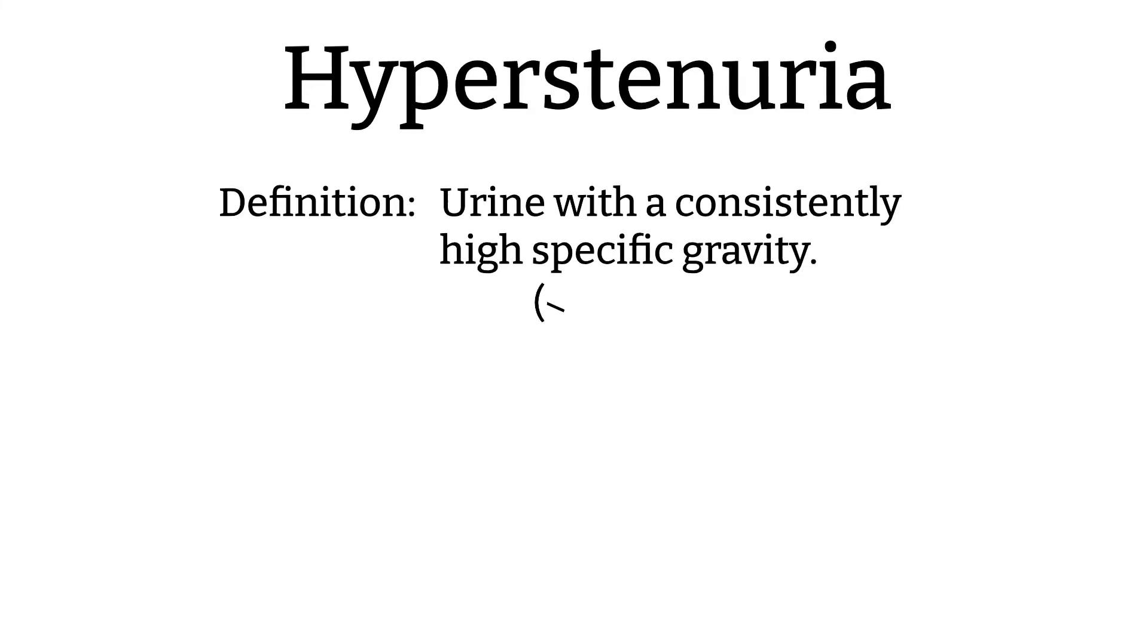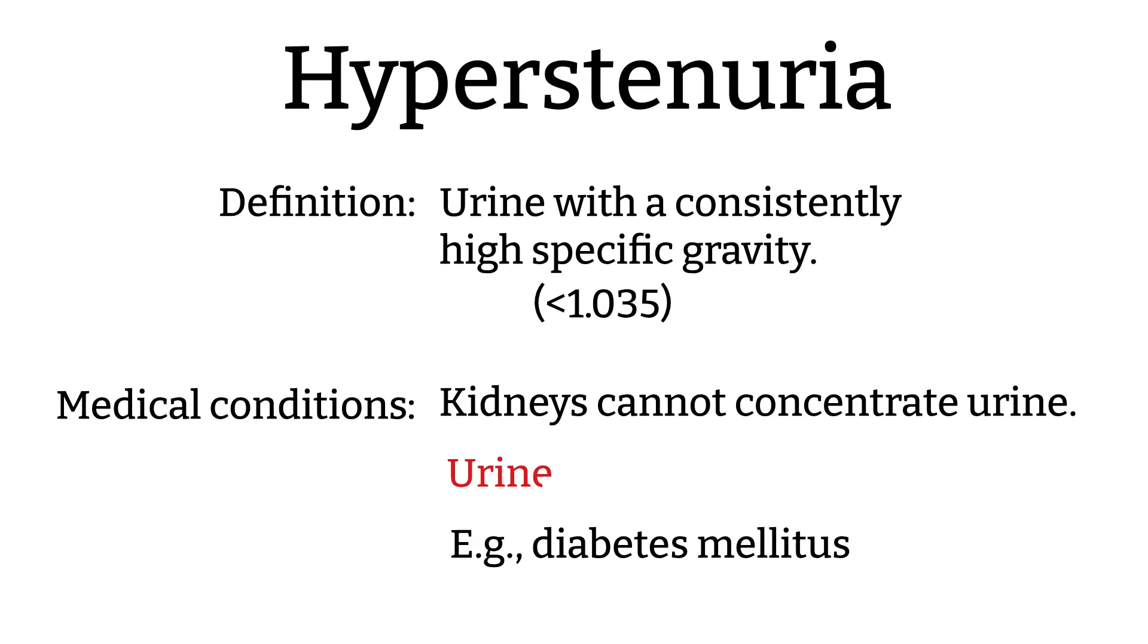Hypersthenuria is used to describe a urine with consistently high specific gravity. This could indicate dehydration or medical conditions like diabetes mellitus. In diabetes mellitus, there is a deficiency of insulin and excess of glucose. Glucose molecules are very dense and therefore the urine will have a very high specific gravity.